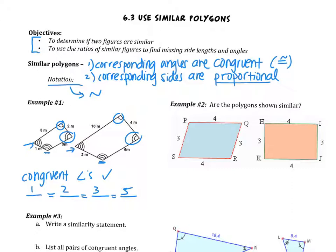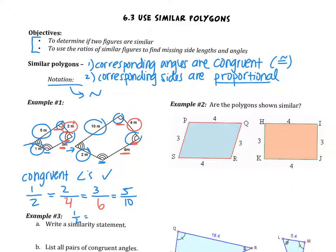We need to figure out which sides correspond in the second figure — don't just guess. The side of five is the biggest, so it goes with the biggest side on the second figure, which is ten. The side of one, the smallest, goes with the smallest side of two. Another way is to look at the angles: the side of two is between one and two tick marks, which corresponds to four on the other figure. The side of three is between two and three tick marks, corresponding to six. All four ratios simplify to one-half, confirming the sides are proportional. Both requirements — congruent angles and proportional sides — are satisfied, so the polygons are similar.